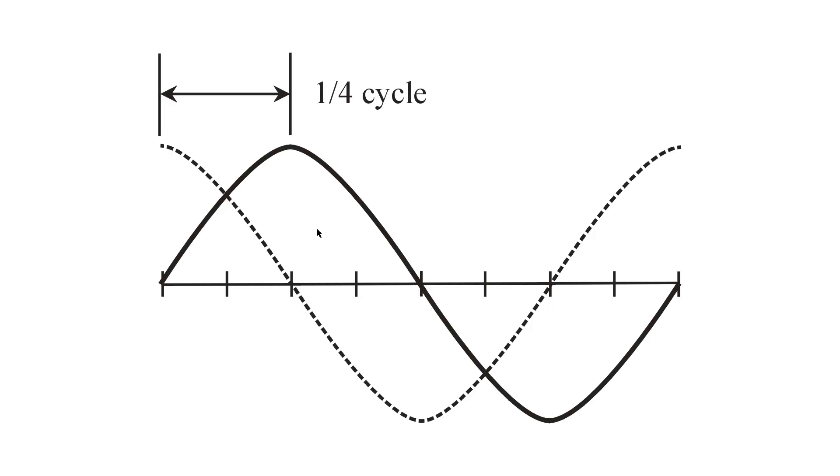But the important thing here is a quarter of a cycle or 90 degrees of phase, and the two waves have to have the same frequency so that they maintain a constant phase difference of a quarter of a cycle. So that is phase quadrature.